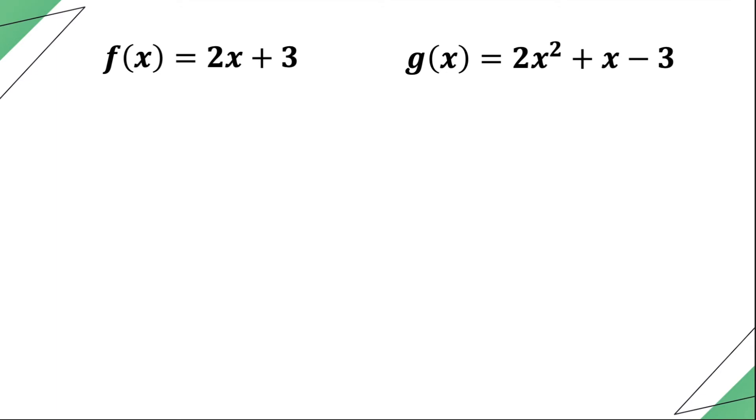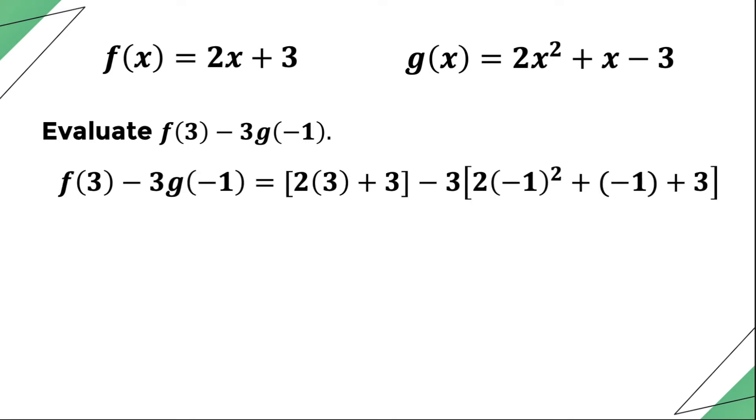For example number 3, we're going to use both functions f and g. For this example, we will substitute 3 to the x in function f and negative 1 for all the x's in function g. Take note that for function g, we're going to compute for the value of the function at negative 1 then multiply the result by 3. After performing all the indicated operations, the value of f(3) minus 3 times g(-1) is equal to negative 3.